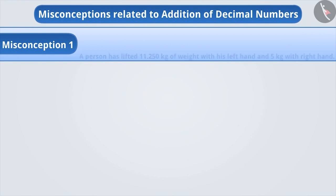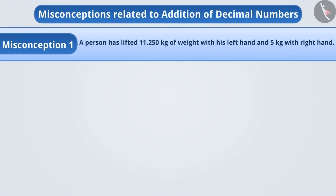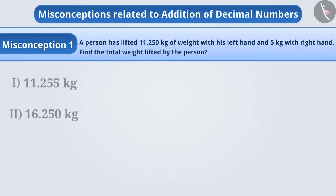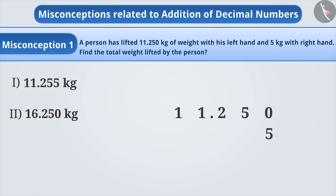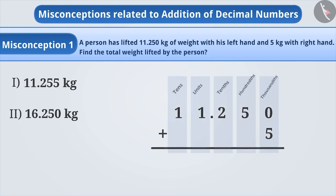Misconception 1. A person has lifted 11.250 kg of weight in his left hand and 5 kg with his right hand. Find the total weight lifted by the person. While adding decimal numbers,